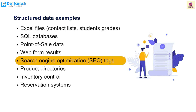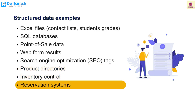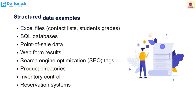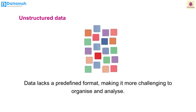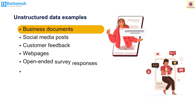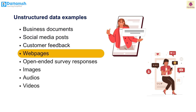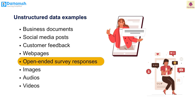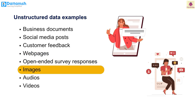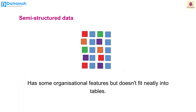Unstructured data: data lacks a predefined format, making it more challenging to organize and analyze. Examples include business documents, social media channels, social media posts, customer feedback, web pages, open-ended survey responses, images, audios, and videos.